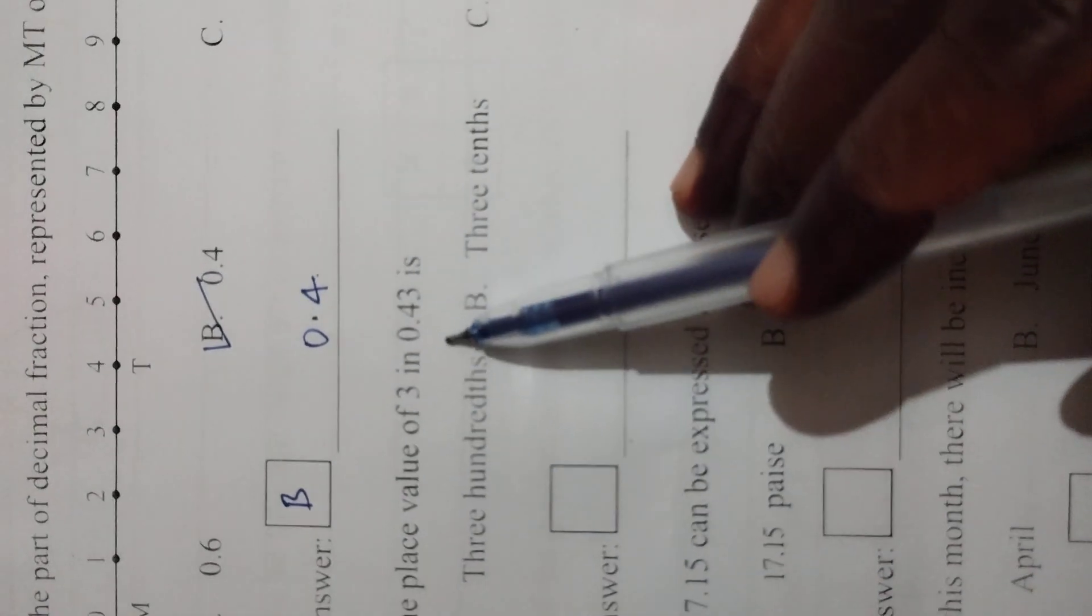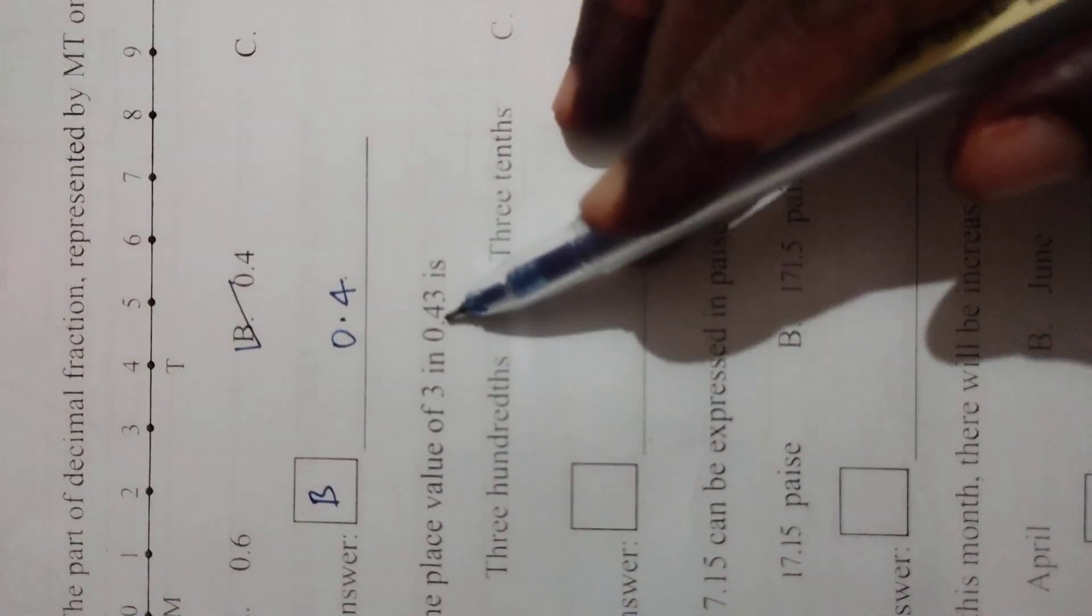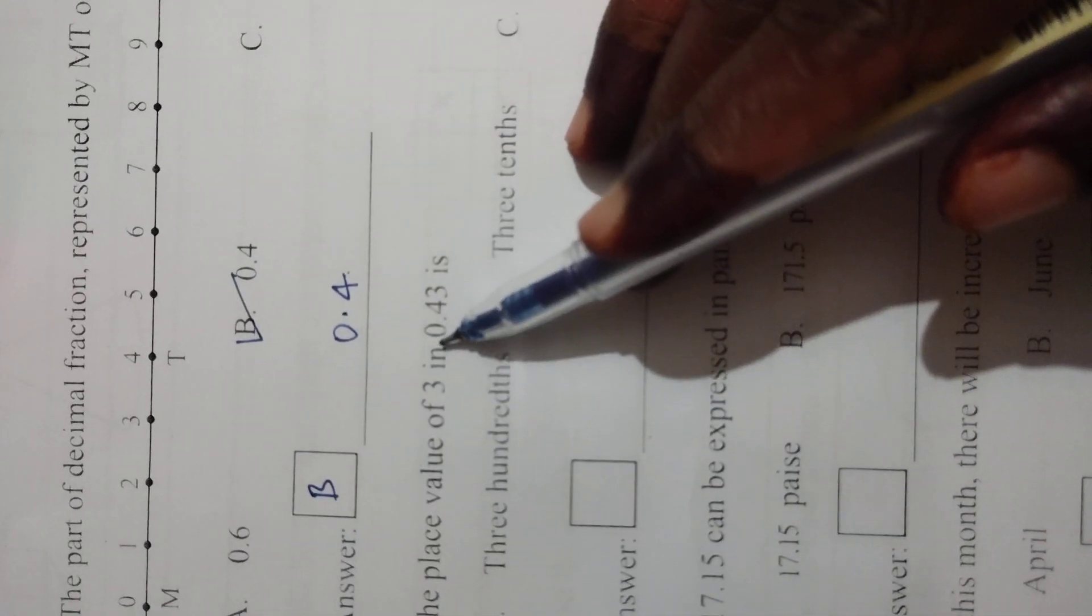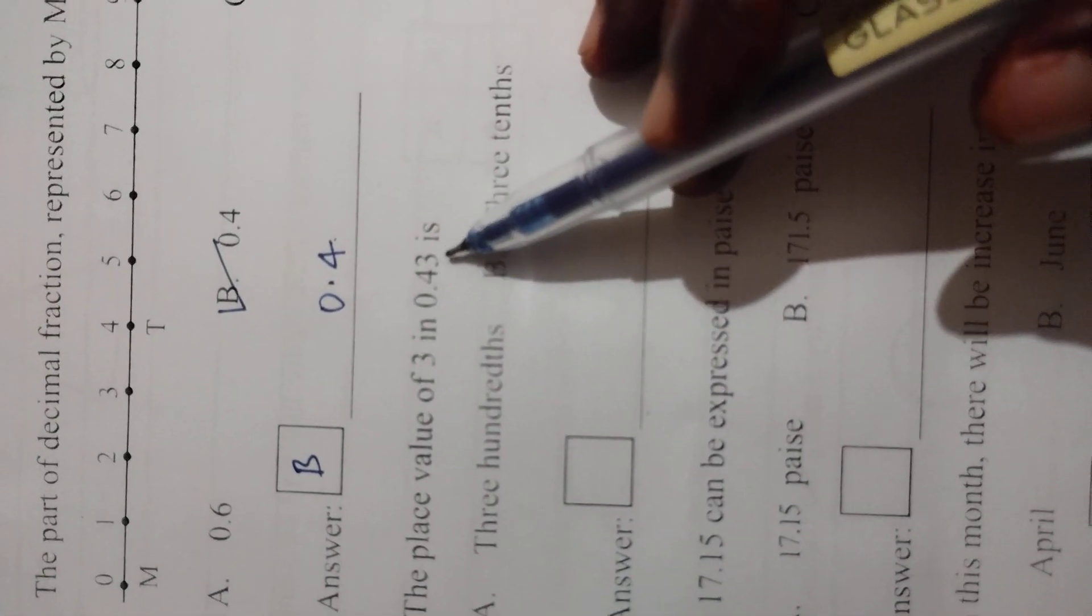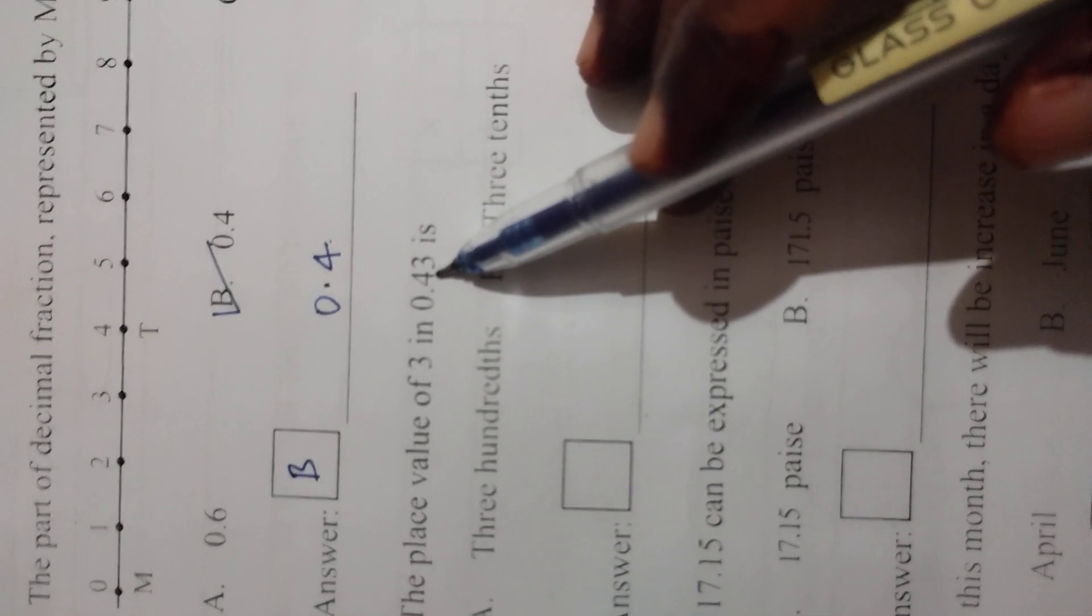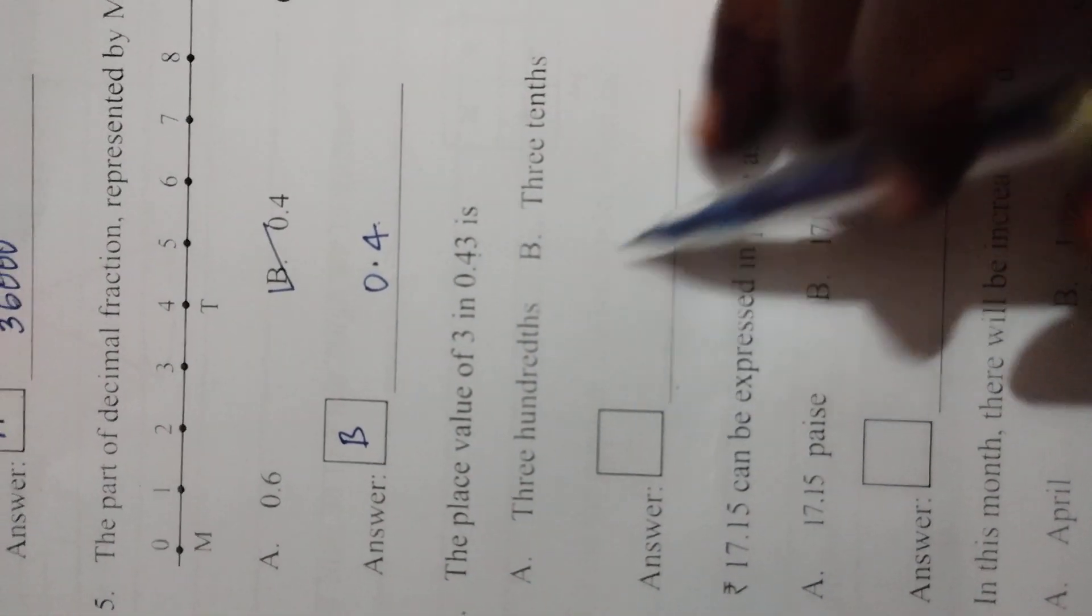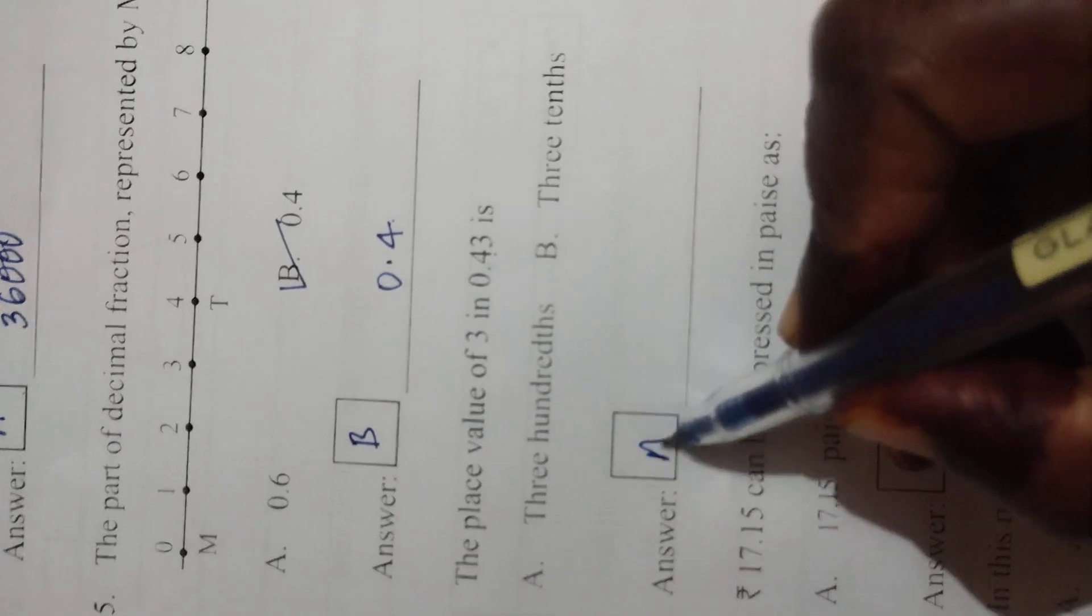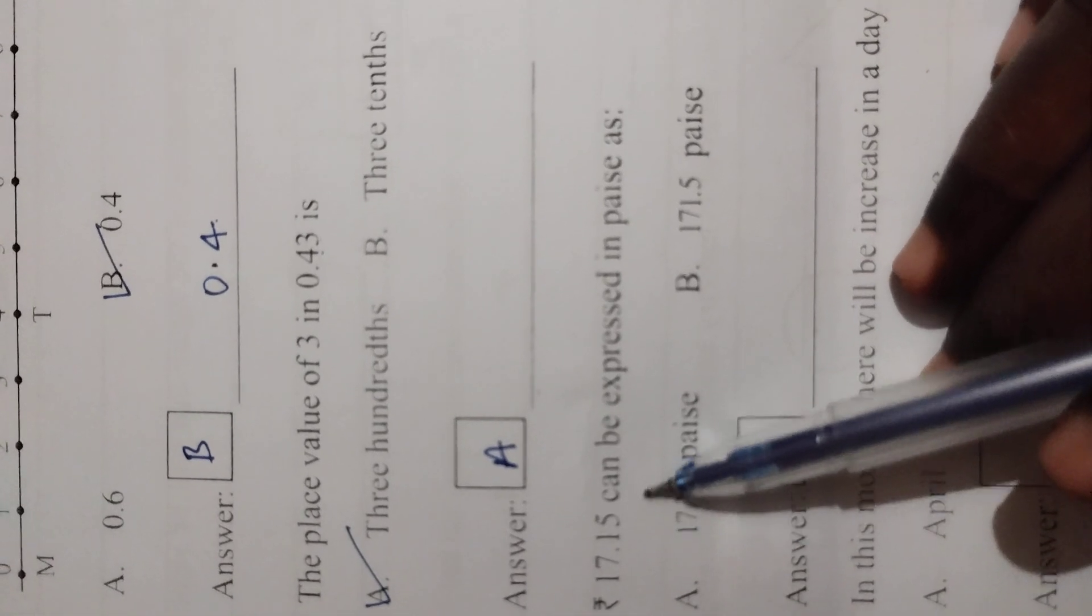The place value of 3 in 0.43 is. Point before number we can write one, tens like this. After number you can write digits only. 4 is four-tenths, 3 is hundredths. So here you can write three-hundredths. A is the correct answer.